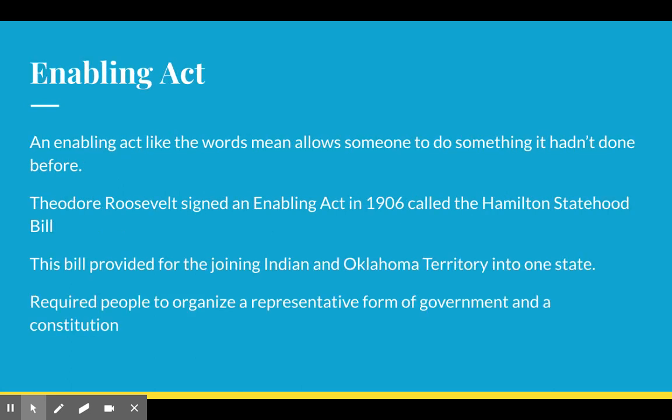In 1906, Theodore Roosevelt is going to sign into law the Enabling Act, also called the Hamilton Statehood Bill. It's going to provide legally the opportunity for Oklahoma Territory and Indian Territory to join into one state. This is why they delayed the vote — if they had agreed on the state of Sequoia in 1905, there couldn't be two territories combining into one to make the state of Oklahoma.